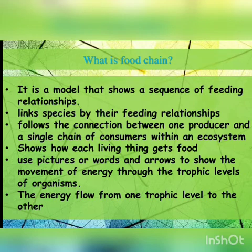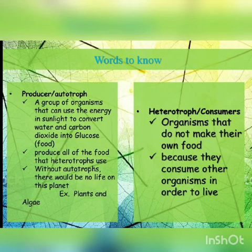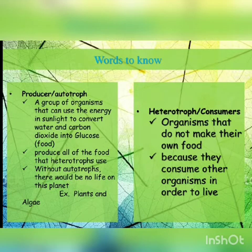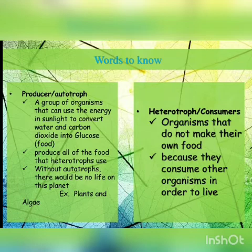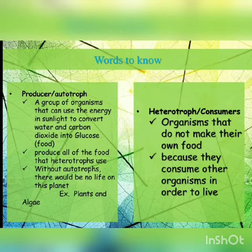Now, important words to know before studying food chain and food web. The first word is producer, or autotroph. Producers, as discussed in the last session, are organisms that prepare their own food. Plants are always the producers because they can use the energy in sunlight to convert water and carbon dioxide into glucose, which is food for the plant.